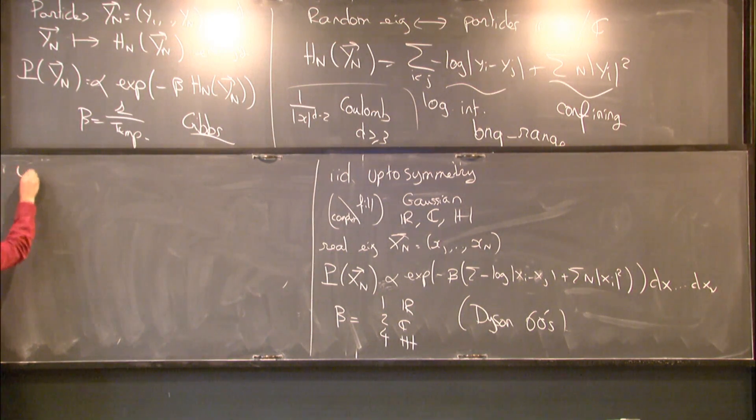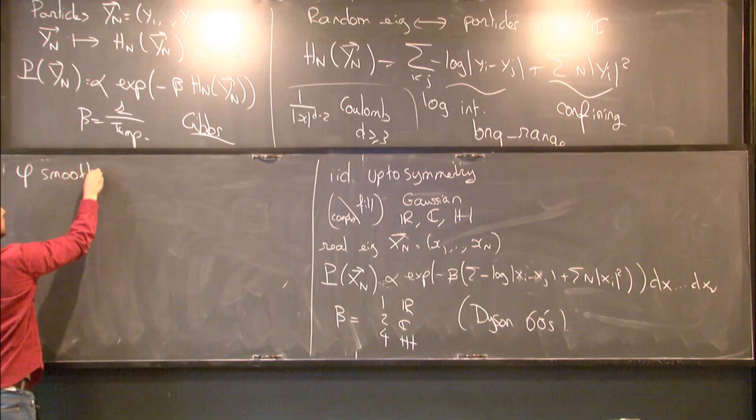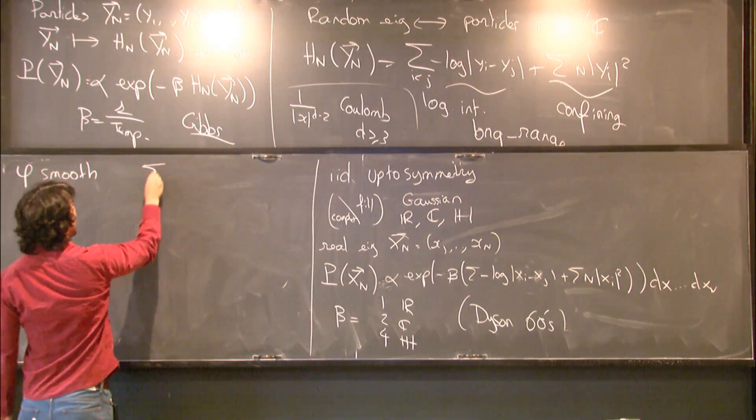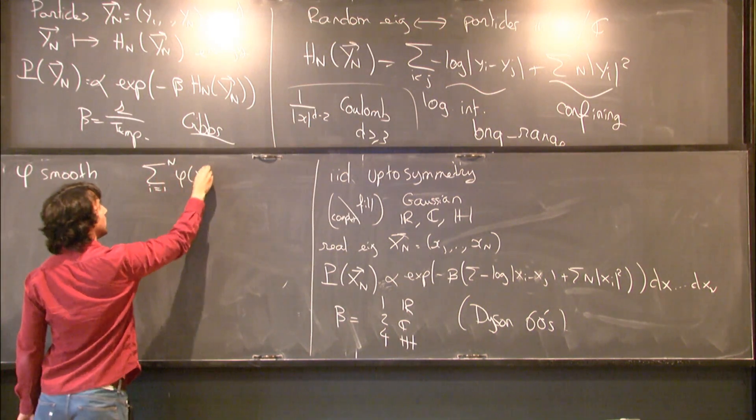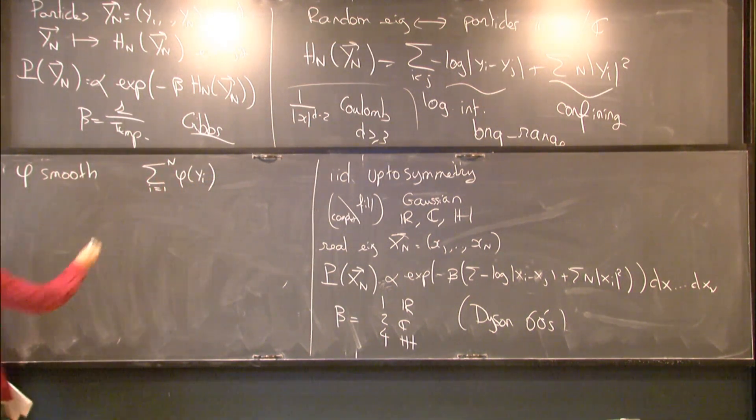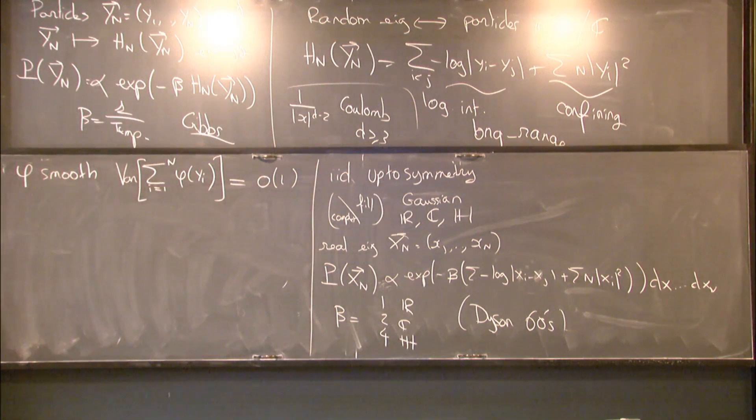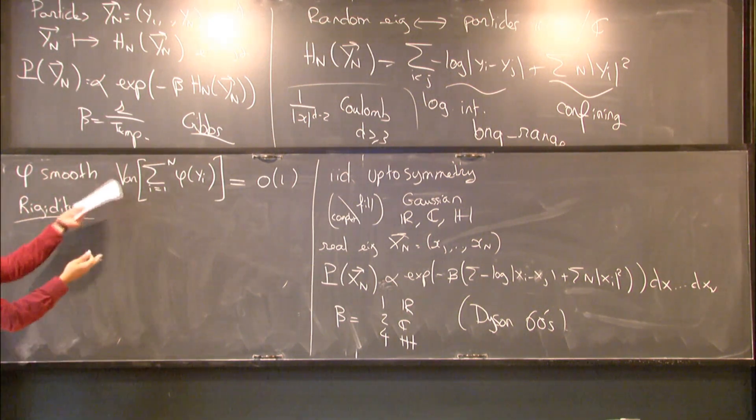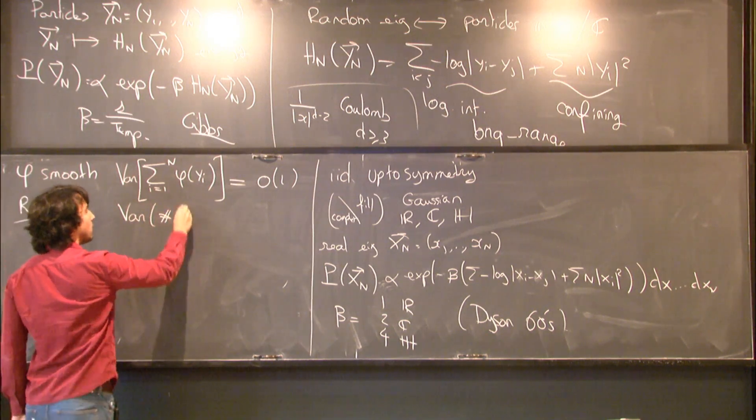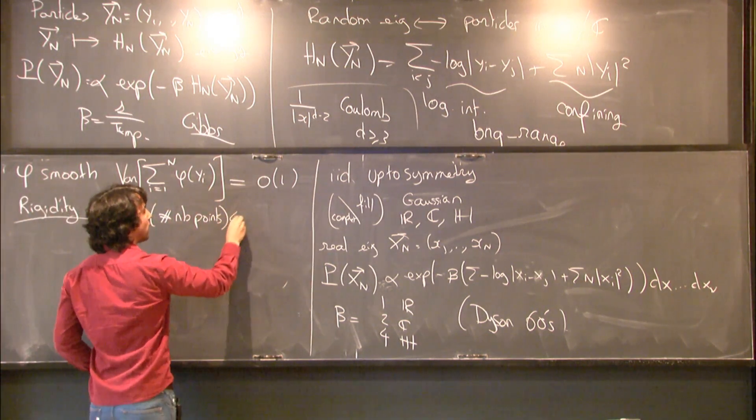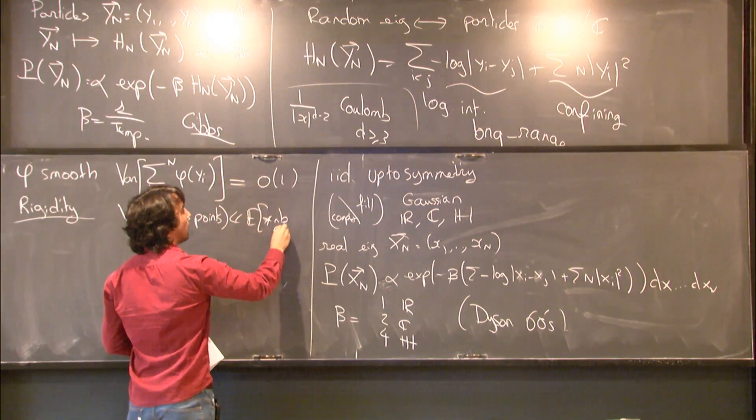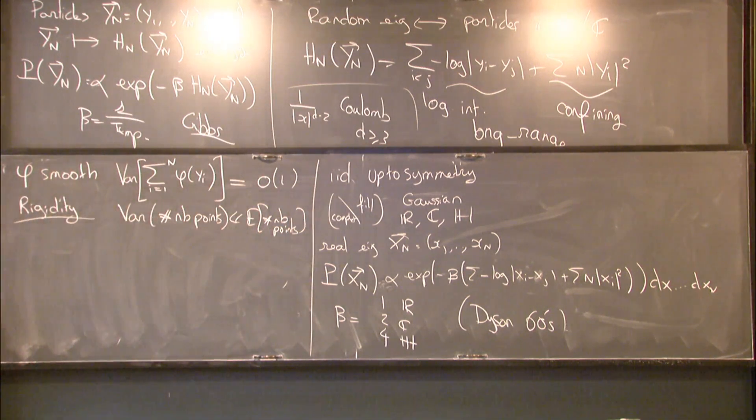In one minute, I can tell you some interesting phenomenons that occur with those systems. Maybe the most striking one is the following. Take φ, a smooth function on R or C. And apply, test it against every particle. That's a random quantity. So I can look at its variance. And it's bounded. So for IID particles, you would get big O of n. So that's an example of the rigidity phenomenon for the systems. They have a very small variance in many different senses. You can also look at the variance of the number of points in a box. And that's much smaller than the expectation of the number of points. If you had a Poisson point process, this would be the same order. So, of course, there is this interaction. So points are not IID. But they are strongly not IID.